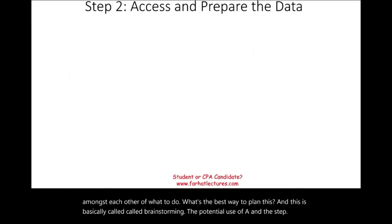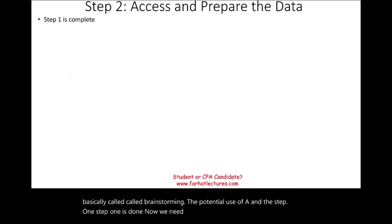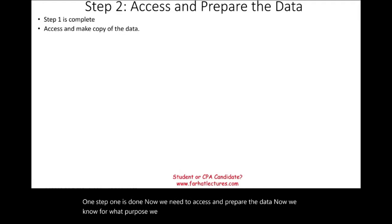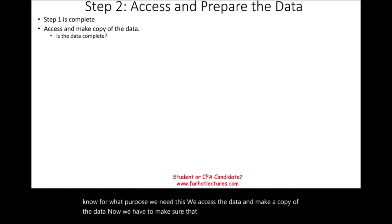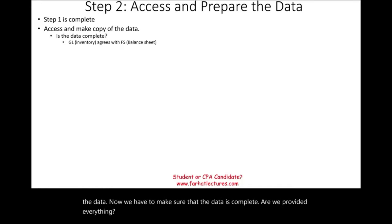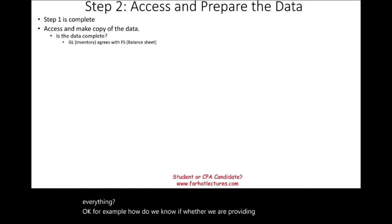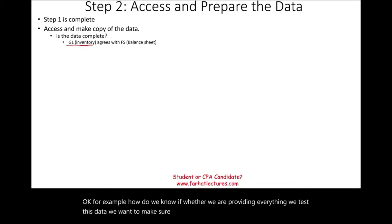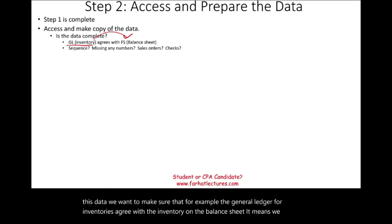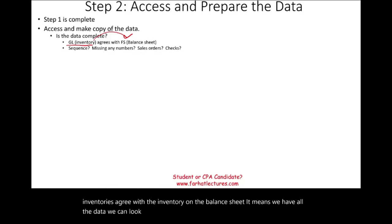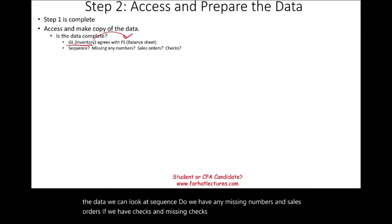Once step one is done, we access and prepare the data. Now that we know the purpose, we access the data and make a copy. We must make sure the data is complete — for example, confirming the general ledger for inventories agrees with inventory on the balance sheet. We also look at sequence: do we have missing numbers in sales orders or missing checks? We need to know if anything is missing.